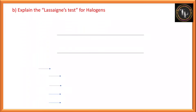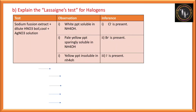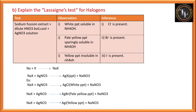Explain the Lassaigne's test for halogen. Sodium fusion extract is treated with dilute nitric acid, boiled, cooled, and silver nitrate solution is added. If a white precipitate soluble in ammonium hydroxide is obtained, chlorine is present. A pale yellow precipitate sparingly soluble in ammonium hydroxide indicates bromine. A yellow precipitate insoluble in ammonium hydroxide indicates iodine. The reason: sodium fuses with the halogen in the compound to form sodium halide, which then reacts with AgNO3 to form AgX precipitate — AgCl is white, AgBr is pale yellow, AgI is yellow. This is a very important question — write both the observations table and the reactions.